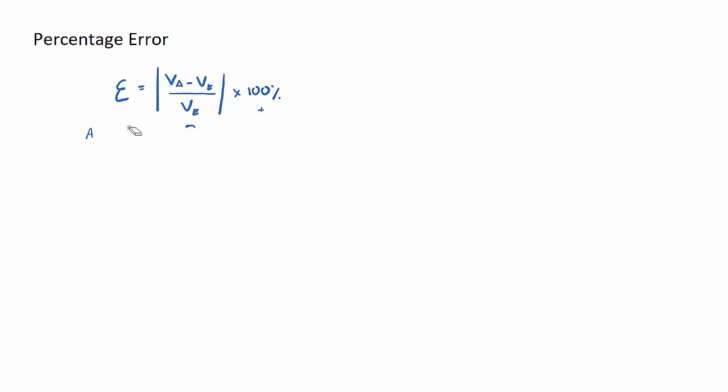Okay, so that's the absolute value signs. Let's talk about VA. VA is our approximate value, so that's an estimate—what someone estimates the quantity to be.